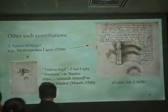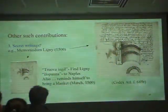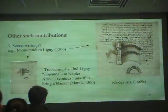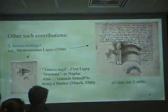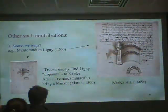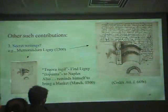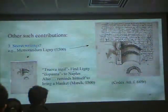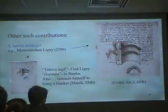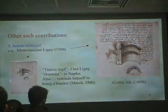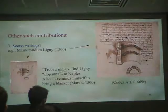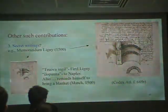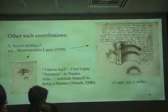In secret writings, we have the so-called memorandum from Milan, 1500. It's a very strange thing. For example, you'll find these words: 'trova in G.' This is actually written in Italian from right to left, which really means 'trova ligni' — you read 'lini' the other way around: L-I-G-N-I, meaning 'fine lini.' And 'I-lopana' becomes 'Napoli.' You have to go there to find it.